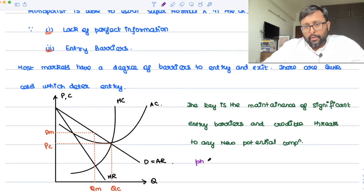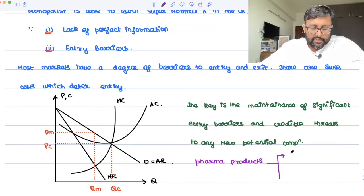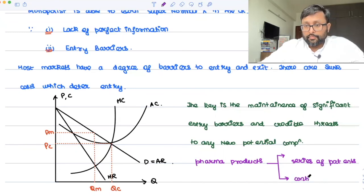So for example, in case of pharma products, how do they create entry barriers? They have a series of patents with them. And the continued advertisements, they act as the barriers to entry. And only few selected companies can earn supernormal profits in the long run.